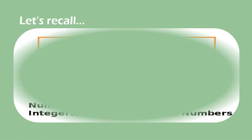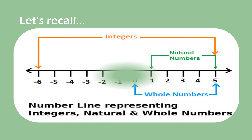Let's recall again: if digit 0 is included in the series of natural numbers, it becomes whole numbers. And the collection of whole numbers and negative numbers is known as integers.